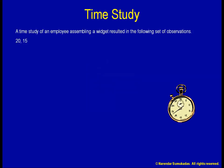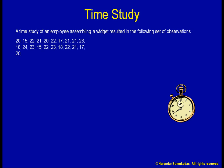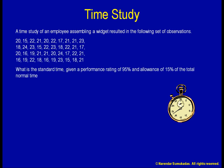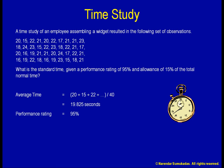Let us take a look at this example. Here is an activity that we studied for 40 iterations. To calculate a time standard for this activity, we first average all our observations. We are told that the employee we observed has a 95% performance rating. So if a 95% employee took this many seconds, an average employee — that is, a 100% employee — will take less time than that. We can get an average employee's time by taking 95% of the observed employee's time, which we call the normal time.